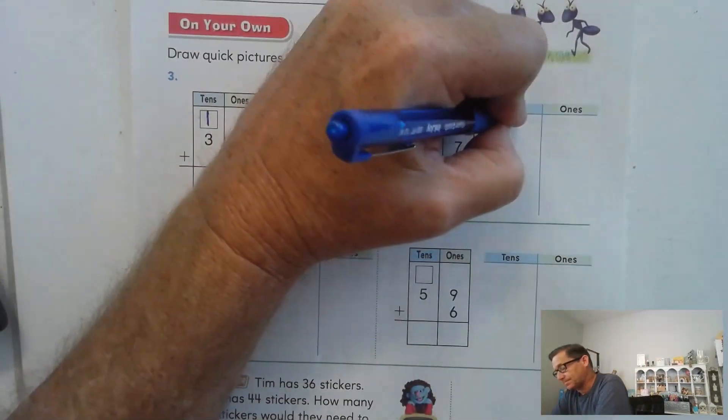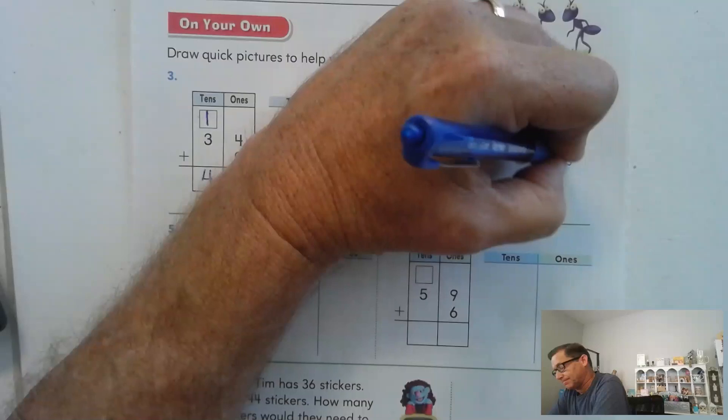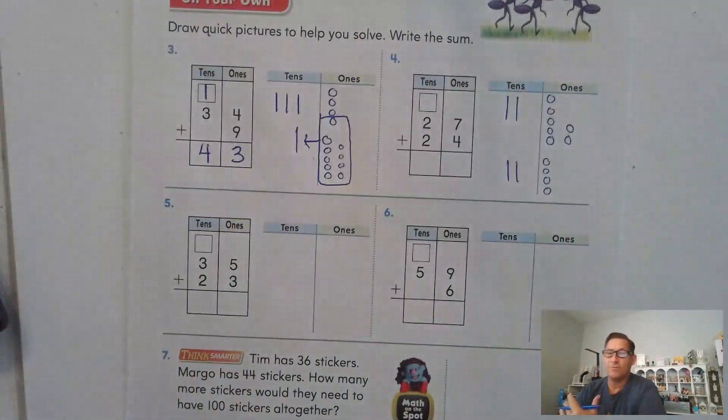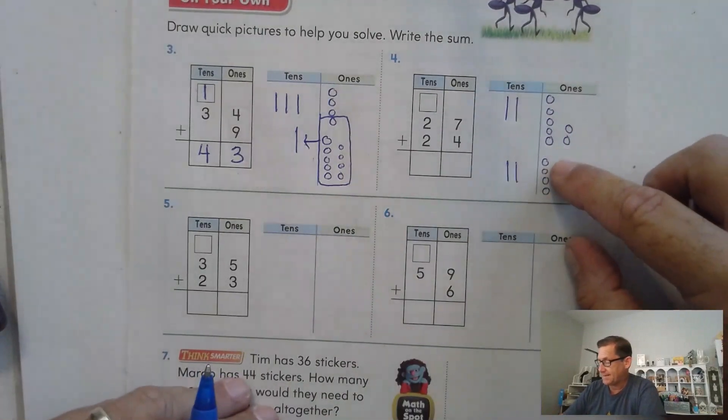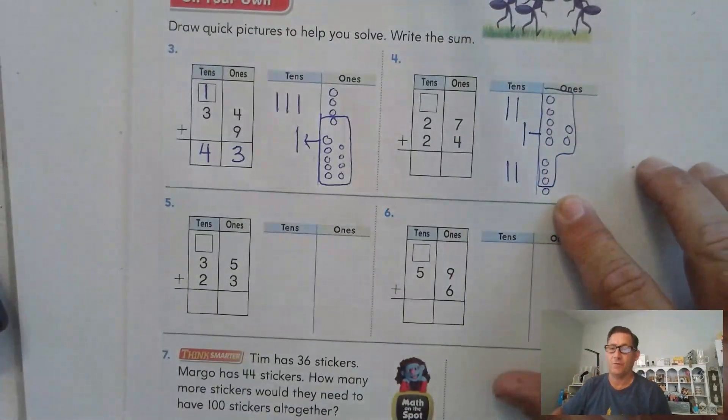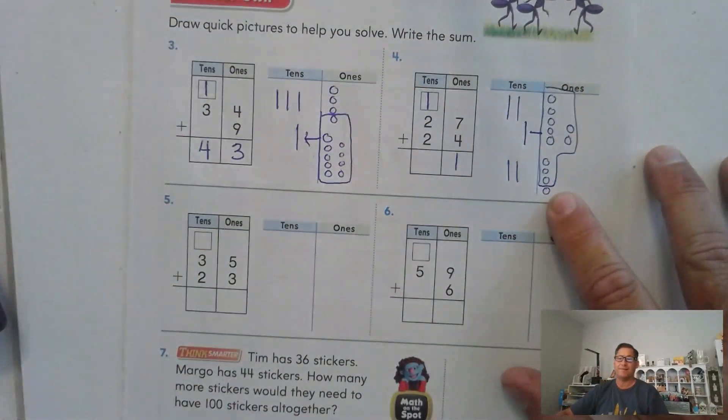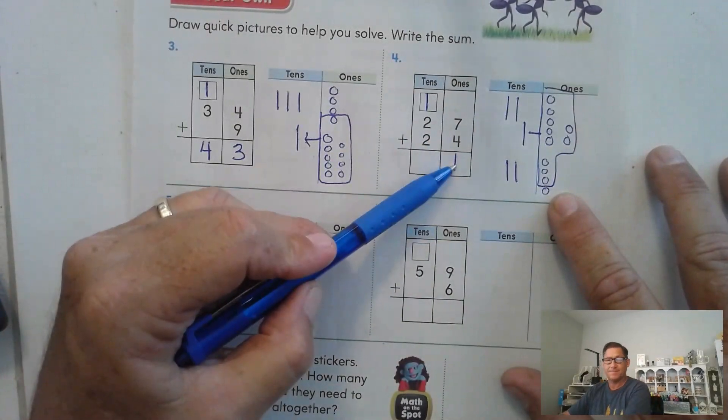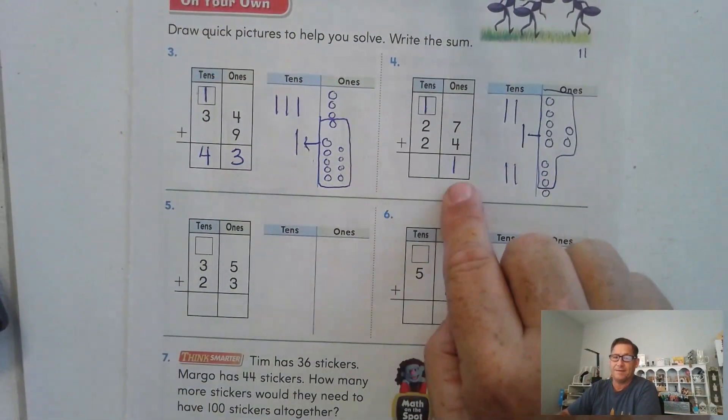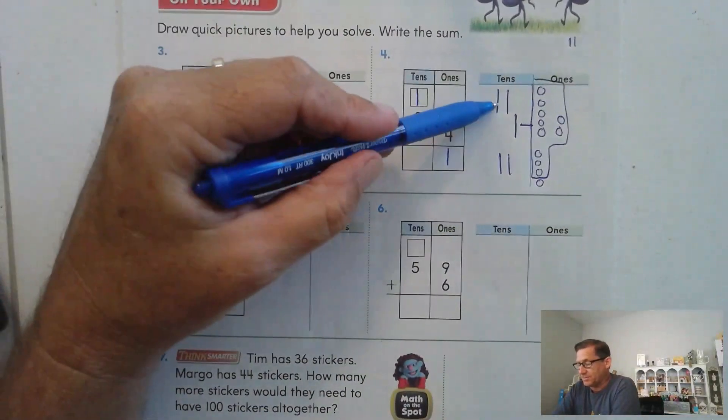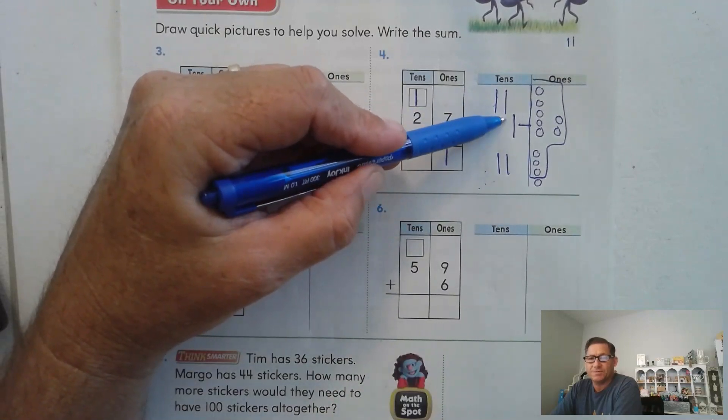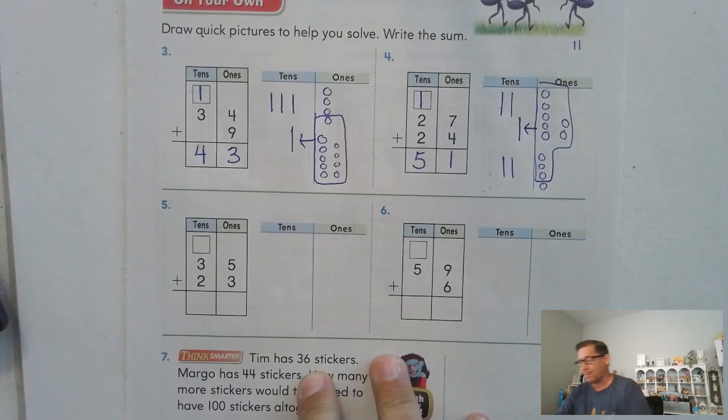27 plus 24. So there's 27 and we need to add 24. Are there any ones that need to be regrouped? Seven, eight, nine, 10, 11. There's 11 ones. So that means I can trade 10 of the ones for a 10. And I have one one left. And that makes sense. Seven plus four is 11. So when we write the number 11, we have one 10 and one one. How many tens do we have? We have two plus two from the original problem. Two and two is four plus the regrouped 10 gives us five.